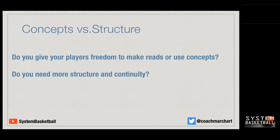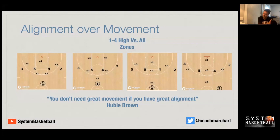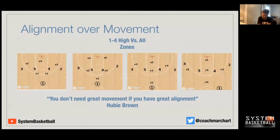We're going to talk about alignment. One alignment that will work versus basically all zones is the one-four alignment. The left diagram shows a one-four versus a two-three — you're putting two players at the elbows and two players at the wings, making the defense decide how they're going to guard that. The same thing applies with the one-two-two, one-three-one, and a one-three-one shown in the third diagram.